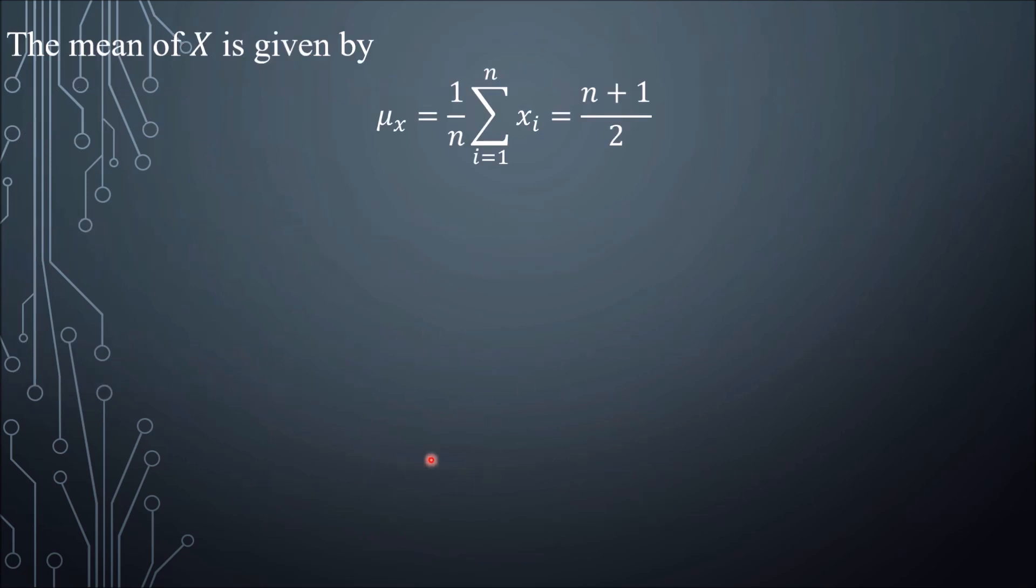The mean of random variable X is given by the formula (n + 1)/2 and the variance is (n² - 1)/12.